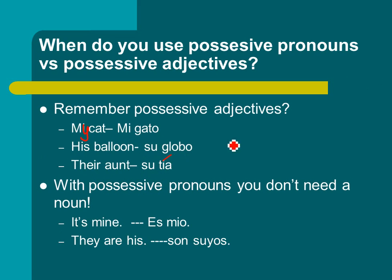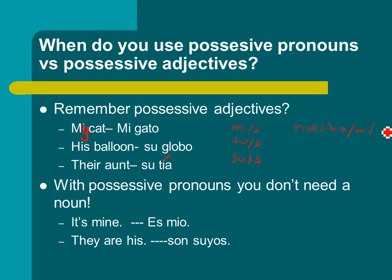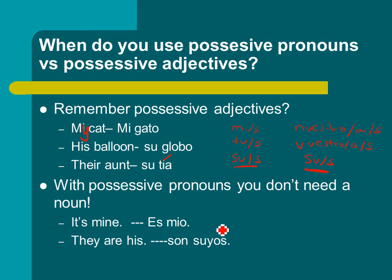Our possessive adjectives were mi or mis, tu or tus, su or sus. And then similar to our possessive pronouns: nuestro, nuestra, nuestros, nuestras. Same with vuestro, vuestra, vuestros, vuestras. And again, su or sus. Remember, his, her, and theirs are the same, just like in our possessive pronouns.